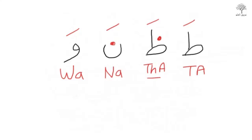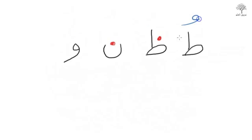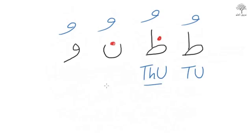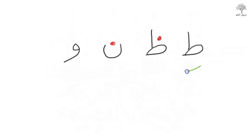Ta. Dha. Na. Wa. Let's try it with a dhamma then. So have a go. Tu. Tu. Thu. Thu. Thu. Nu. Nu. And Wu. Wu. So Tu. Thu. Nu. Wu.